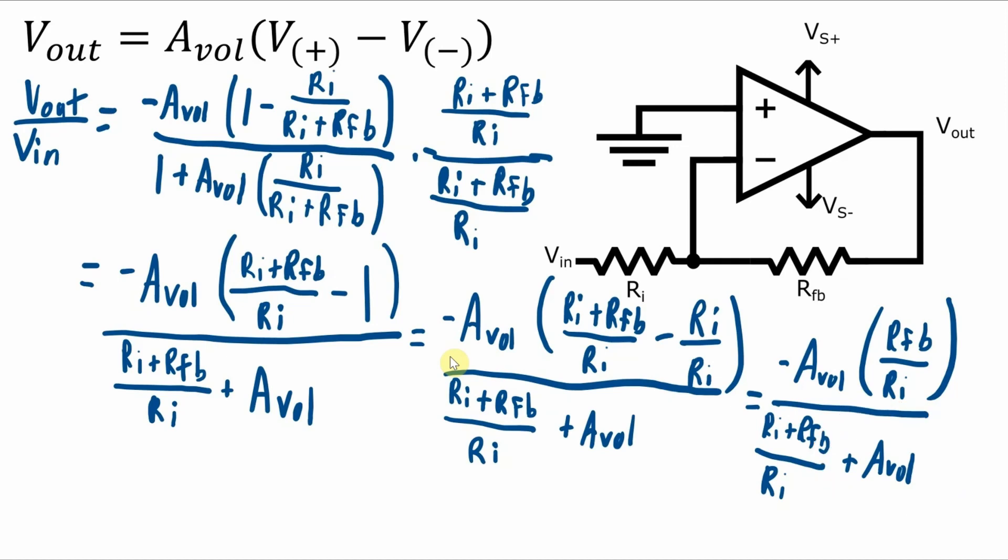So effectively this becomes insignificant and we get negative AVOL RFB over RI over AVOL. Those AVOL terms cancel out and we get negative RFB over RI as long as that open loop voltage gain is big enough.